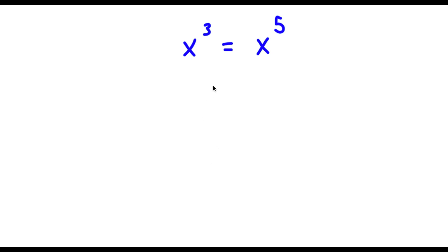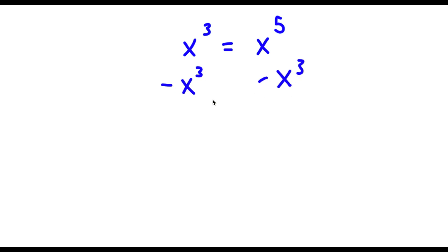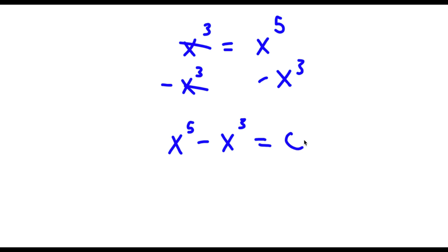Alright, so I have x to the power of 3 is equal to x to the power of 5. The first thing I'm going to do is subtract x to the power of 3 on both sides. These two cancel out and I'm left with x to the power of 5 minus x to the power of 3 is equal to 0.